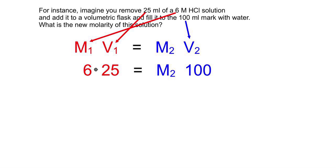So we're going to pull out 25 mils of the 6 molar solution and then we're going to bring the volume up to 100 milliliters with the addition of water and we're going to solve for what the new molarity is.